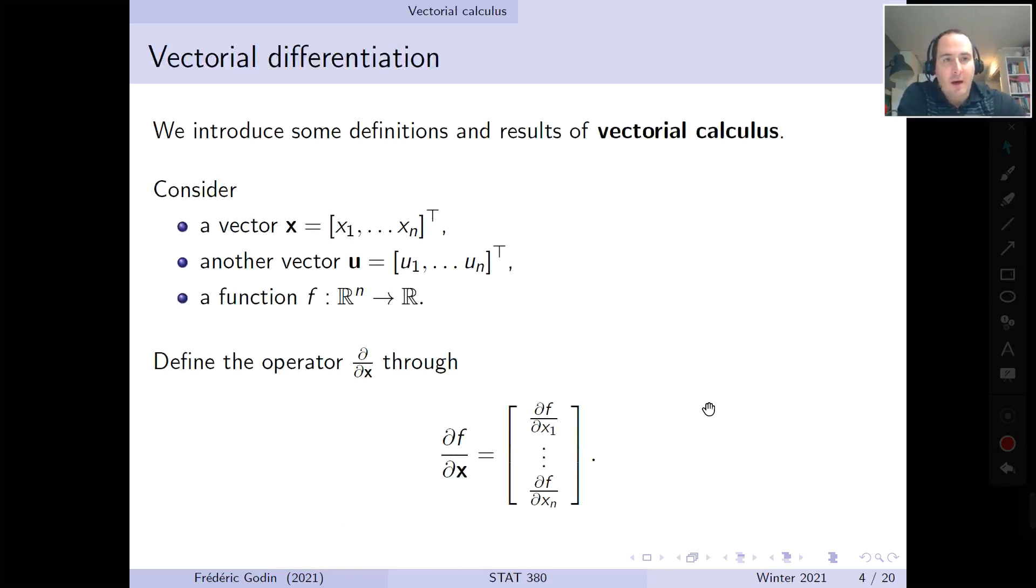Now we will talk about a few results, or at least definitions, of vectorial calculus. So here let's consider a vector x of variables, so x is a column vector of x1 until xn, and then let's consider another vector, column vector u, which contains elements u1 until un. So x and u have the same dimension here. And let's consider a function f, real function f, which takes an element of R^n, so an n-dimensional real vector, and which returns a real number in one dimension. So for such a function, we can define the following operator.